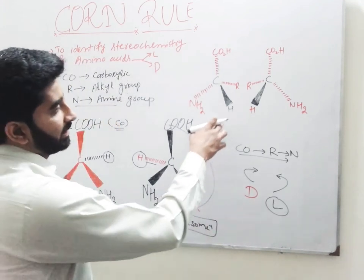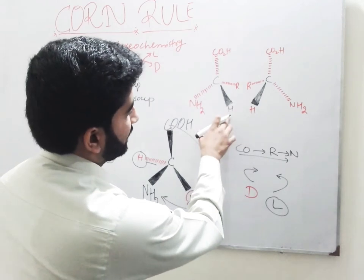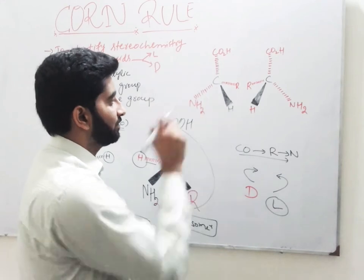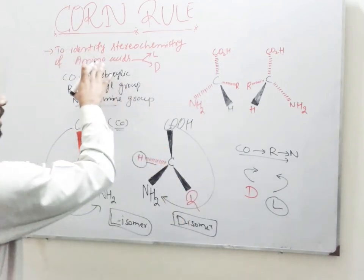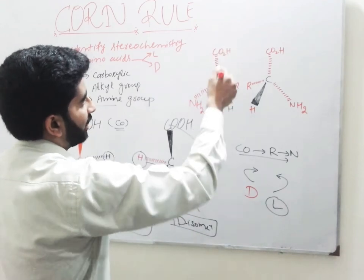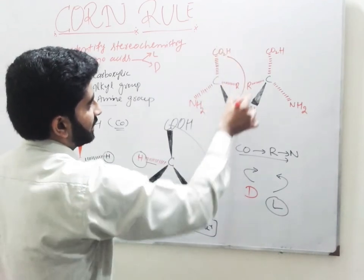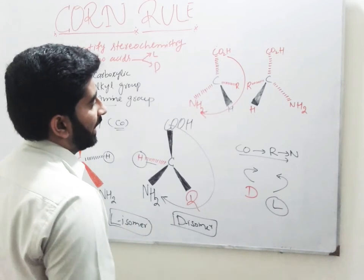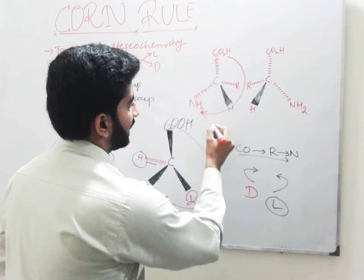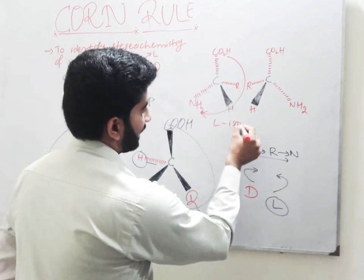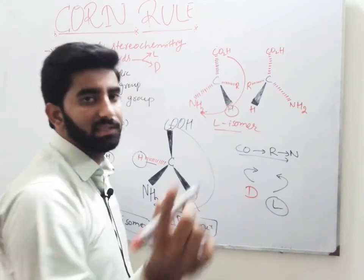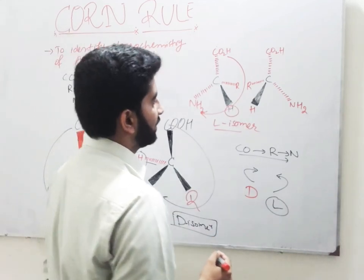But in such compounds in which the hydrogen is directed towards the observer and is represented by the wedge bond, then how do we apply the CON rule? In such cases, we do rotation in the direction of CON, and if the rotation is clockwise, then in this molecule we can see that the rotation is clockwise, so it is our L isomer, because the hydrogen is directed towards the observer and is represented by the wedge bond.